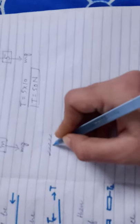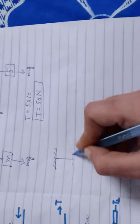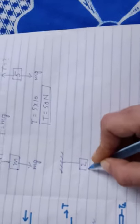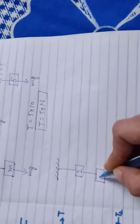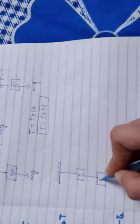Now we will discuss a two-block problem just like this. One is 2 kilogram weight and second is 5 kilogram.